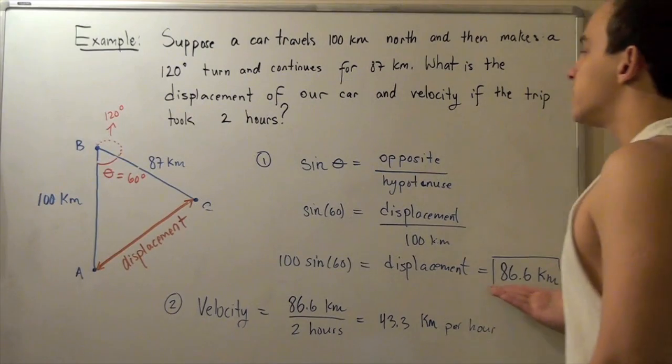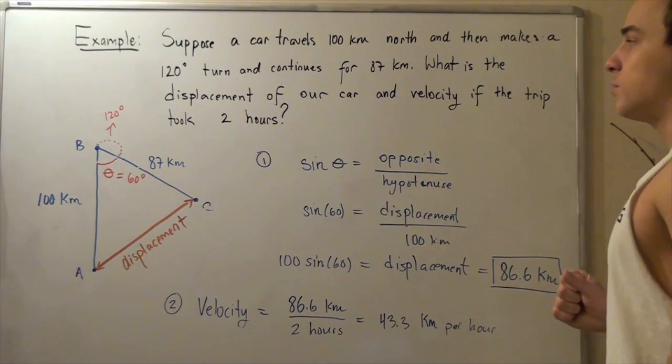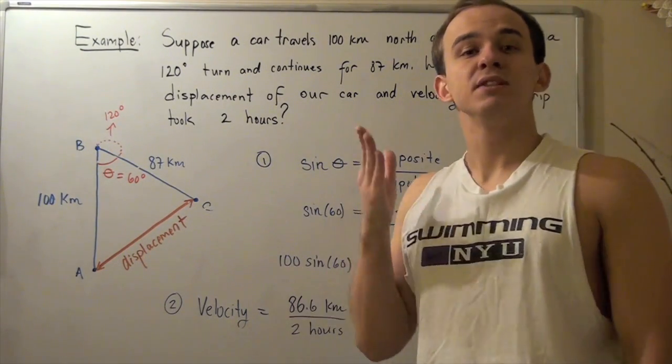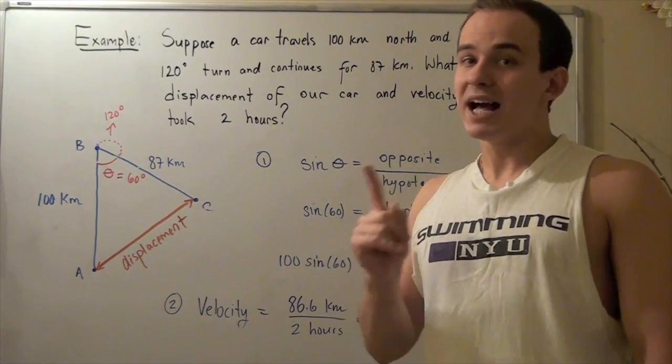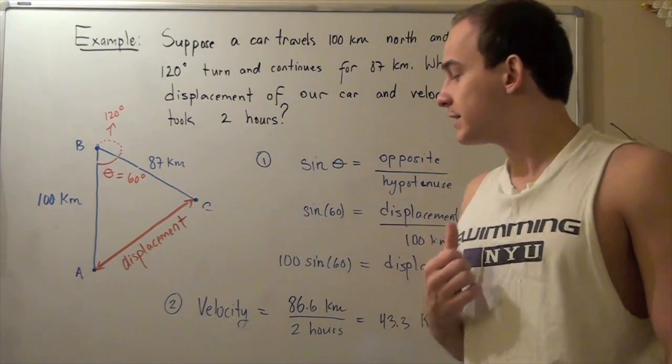This is our displacement. We found one part of this problem. To find our velocity, we recall that the formula for velocity is displacement over time, not distance over time, because velocity is a vector.